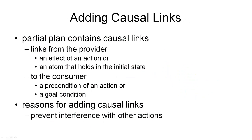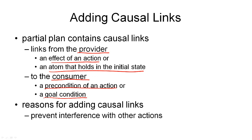The next component of a partial plan we'll be looking at are the causal links. If we only add actions to a plan when we have a good reason for doing so, then perhaps it's a good idea to record that reason — the rationale for adding this action — in a causal link. So adding causal links is our next plan refinement operation. A causal link always goes from a provider to a consumer. There are two possible providers: an effect of an action that we've just added to the plan, or an atom that holds in the initial state. The consumer of a causal link can also be one of two things: a precondition of an action that we've added to the plan, or a goal condition that we need to satisfy. Note that implicit in this, we also have an ordering constraint — the provider must come before the consumer. But we will deal with ordering constraints separately and later.